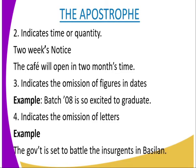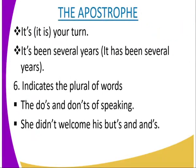The apostrophe also indicates the omission of figures and dates — example: the class of '08 is so excited to graduate. Number four, the apostrophe indicates the omission of letters — example: the gov't is set to battle the insurgents in Barcelona. Also: it's your turn, where we have omitted letters from "it is." It's been several years, instead of saying it has been several years. Number six, the apostrophe indicates plural of words — the do's and don'ts of speaking.